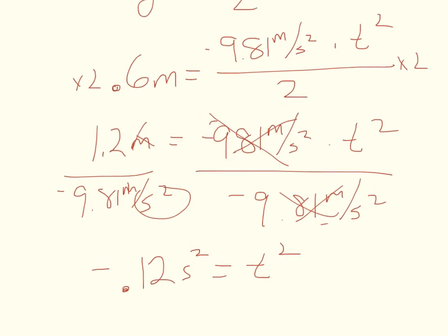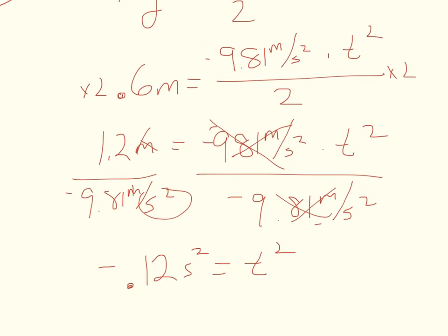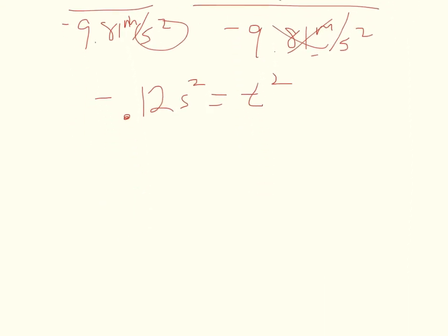Then I can use my calculator and I have to square root both of these sides so I will square root this side and square root this side. The seconds squared ends up getting cancelled when I put in 0.12, negative 0.12 seconds squared into my calculator I get 0.35 seconds is equal to my time. Excellent.